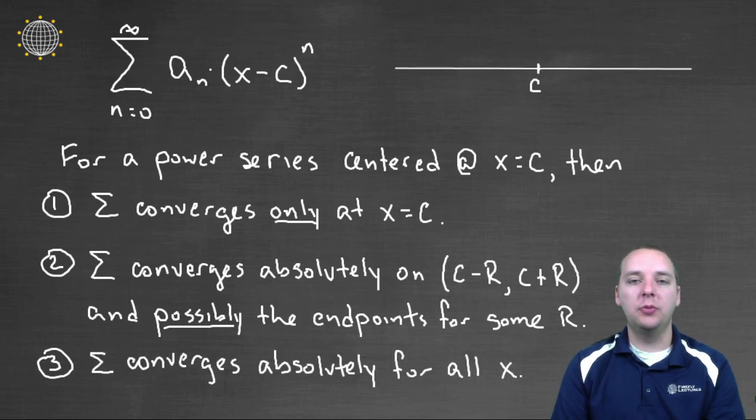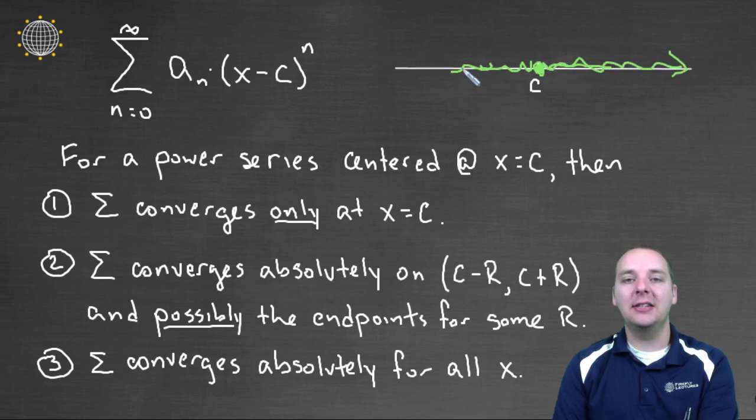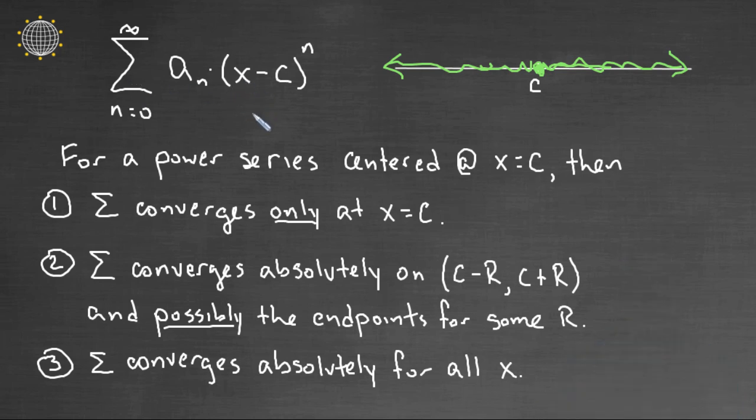And there's a third option, one last case. Maybe it converges at the center. Maybe it'll converge to the left and to the right of your center. But maybe the reach or the radius is so big, it actually goes to infinity and would converge for any x value. Which is certainly possible. There are power series that will converge or add to a finite number for any given x value.